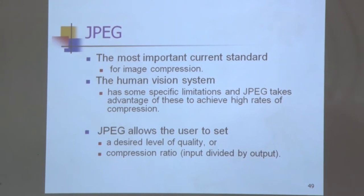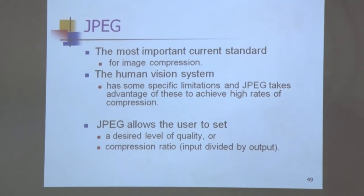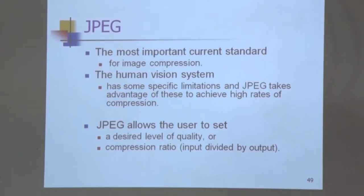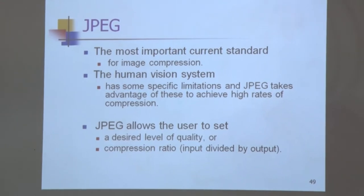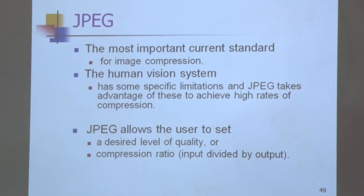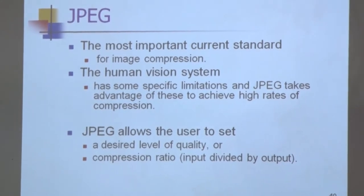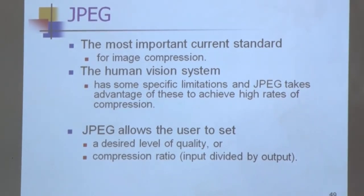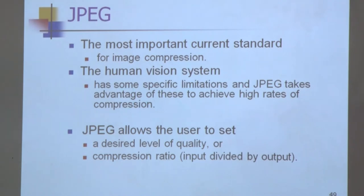Another file format is JPEG — Joint Photographic Experts Group. We will study the entire JPEG scheme in chapter 7, and MPEG in chapter 9. In short, there are two types of JPEG: the original JPEG and JPEG 2000.